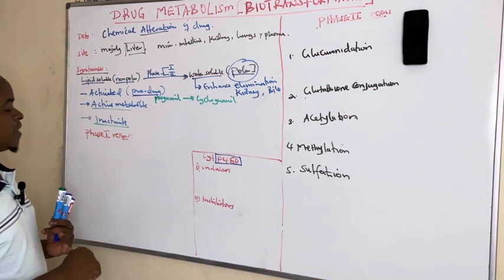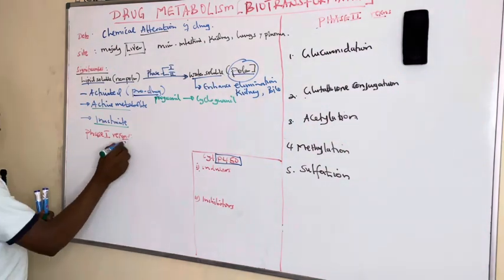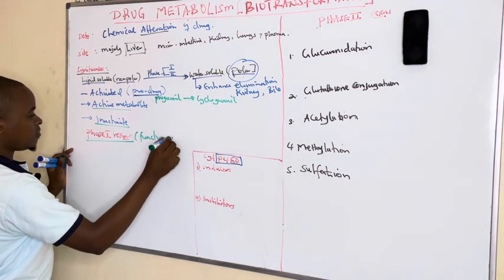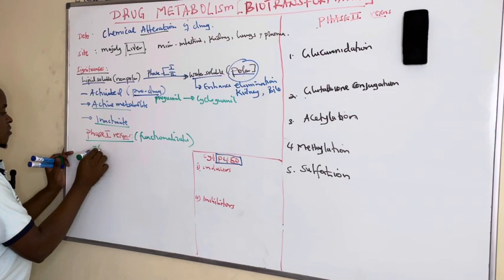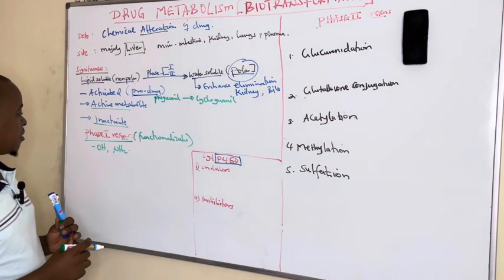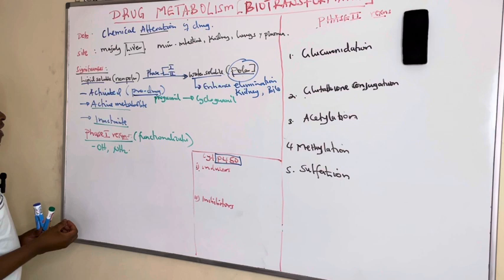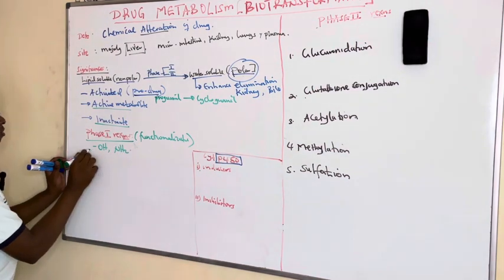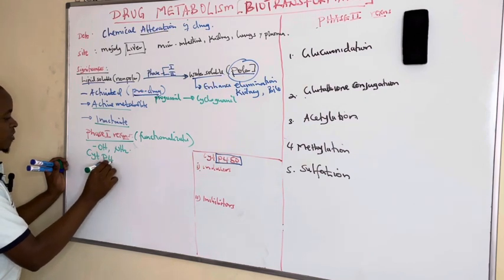Now we can talk about the phases, beginning with phase 1 reactions, which are called functionalization reactions. These involve either adding or removing a functional group such as a hydroxyl, amine, or carboxyl group to make drugs polar for easy elimination. These reactions are catalyzed by heme-containing mixed microsomal enzymes — the cytochrome P450 isoenzymes.